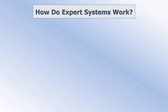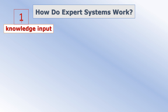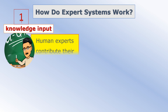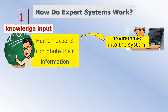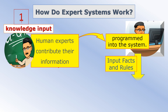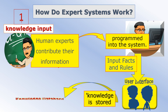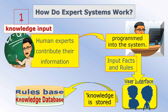How do expert systems work? First, the expert system must be fed its knowledge, where human experts contribute their information on a particular subject matter, which is programmed into the system.